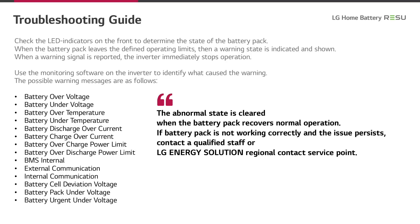The troubleshooting guide shows you what to do in case of a failure. When your failure occurs, please check the LED indicators on the front to determine the state of the battery pack. When the battery pack leaves the defined operation limits, then a warning state is indicated and shown.